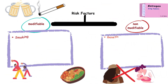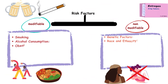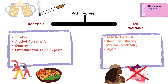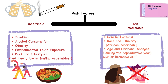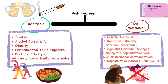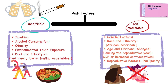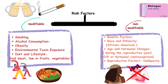Risk factors can be classified as modifiable and non-modifiable. Modifiable risk factors are smoking, alcohol consumption, obesity, environmental toxin exposure, diet and lifestyle. Non-modifiable risk factors are genetic factors, race and ethnicity, age and hormonal changes, and reproductive factors like nulliparity.